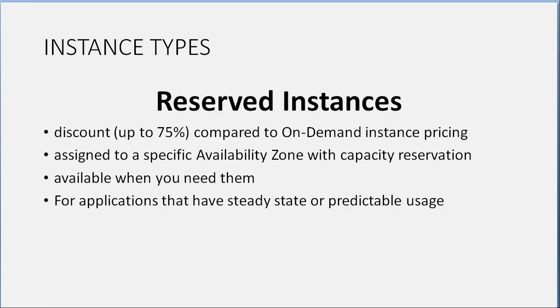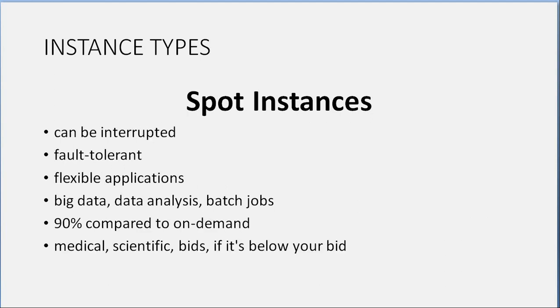Instance types: Reserved Instances offer a discount up to 75% compared to on-demand pricing, assigned to a specific availability zone with capacity reservation — available when needed, for applications with steady-state or predictable usage. Spot Instances can be interrupted and are suited for fault-tolerant, flexible applications: big data, data analysis, batch jobs — up to 90% discount compared to on-demand. Used for medical and scientific bids; if the price is below your bid, the instance runs.